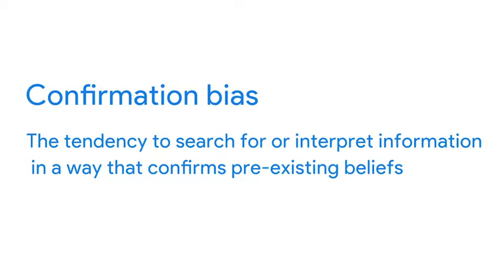The last type of bias we'll cover reminds me of the saying, people see what they want to see. That pretty much sums up confirmation bias in a nutshell. Confirmation bias is the tendency to search for or interpret information in a way that confirms pre-existing beliefs. Someone might be so eager to confirm a gut feeling that they only notice things that support it, ignoring all other signals.